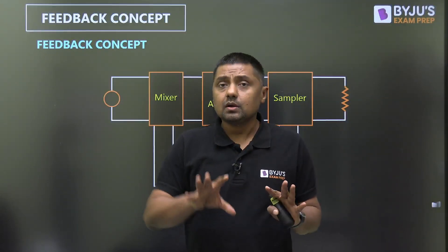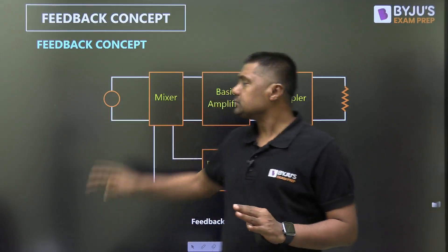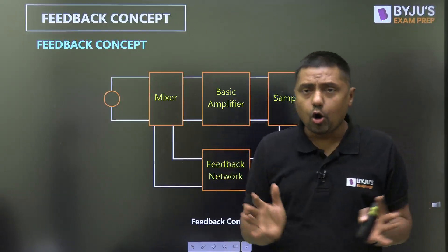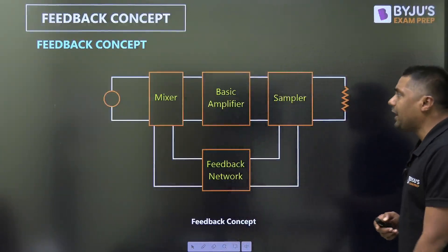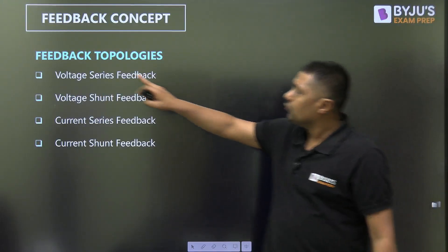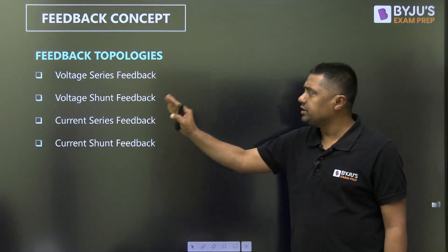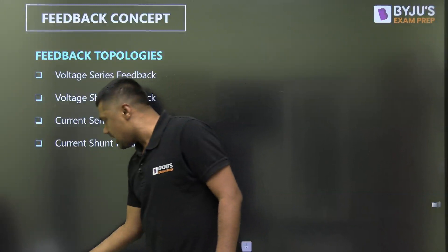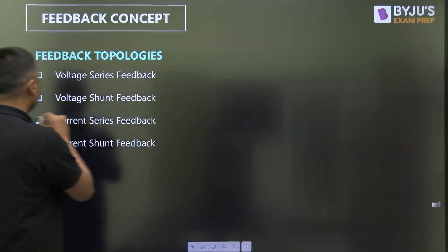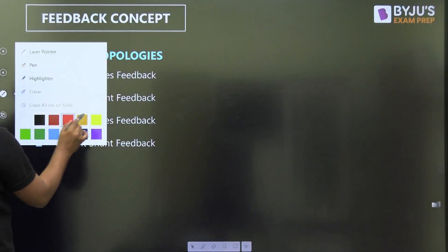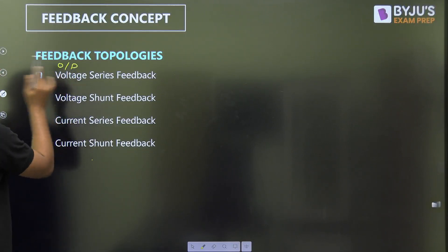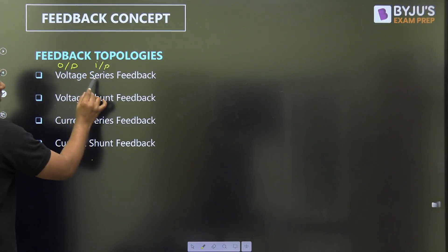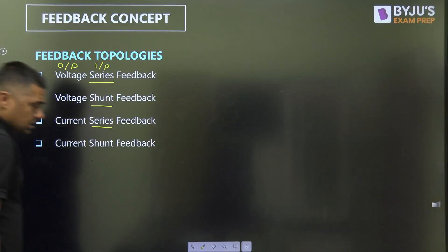So there are four types of amplifier, two types of sampler, and two types of mixer. When we combine all these, there are four types of feedback topology: voltage series feedback, voltage shunt feedback, current series feedback, and current shunt feedback. In this nomenclature, the first word represents the output — what we are sampling — and the second word represents the input connection type. Now we will discuss voltage series feedback.